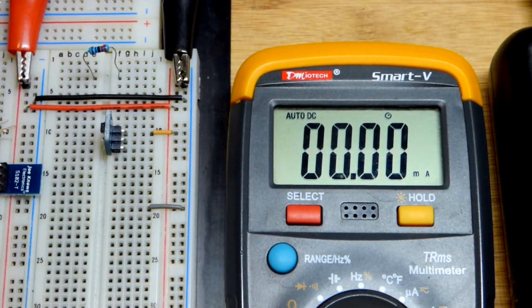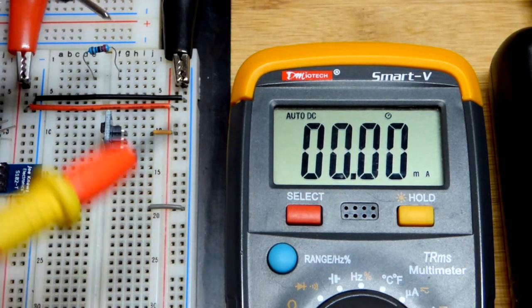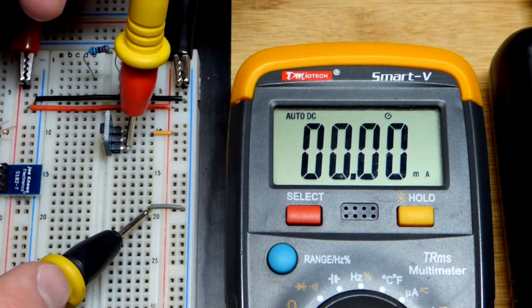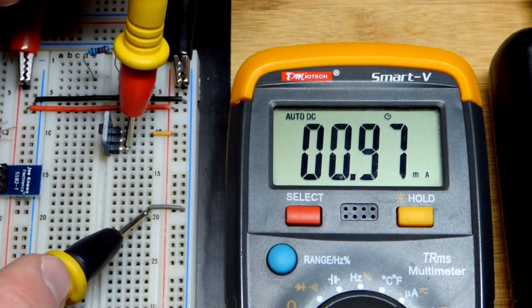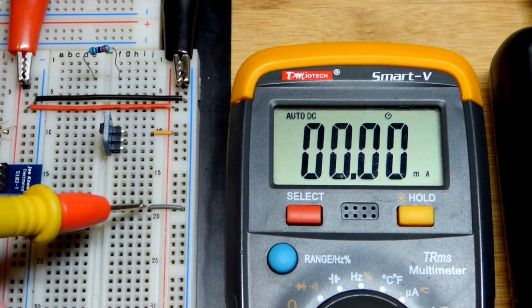It should be one milliamp. I think it has a 10% tolerance where it could be 10% higher or lower. We won't damage anything if I put the probes backwards - we'll just get a negative current. You can see we're pretty close there.